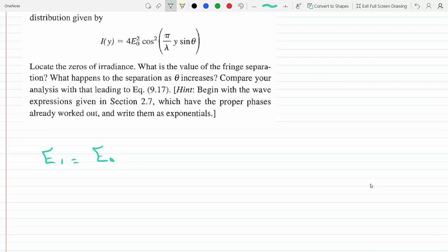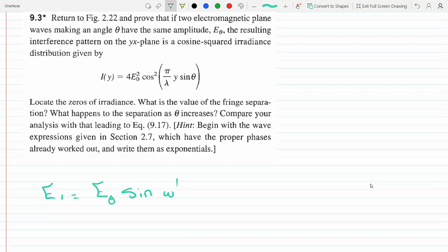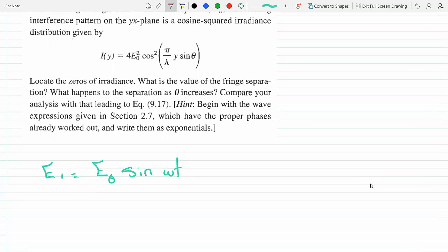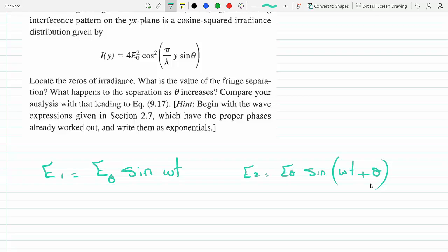E1 equals E0 sine omega t. If that's the first one, the other one, E2, has to be the same thing except here you have to add theta. So these would be the two waves.